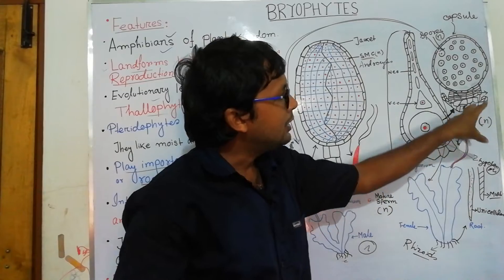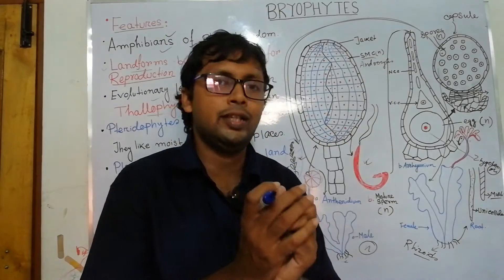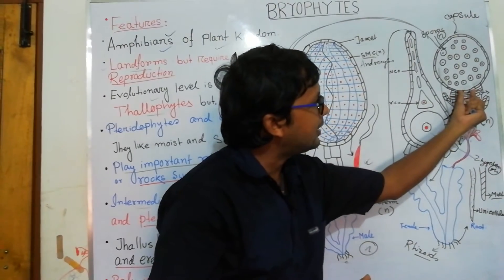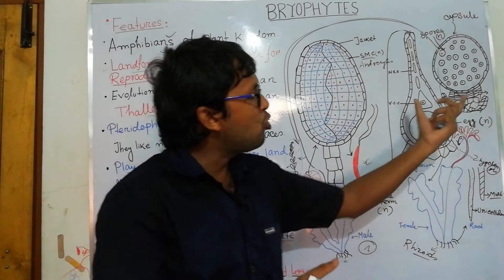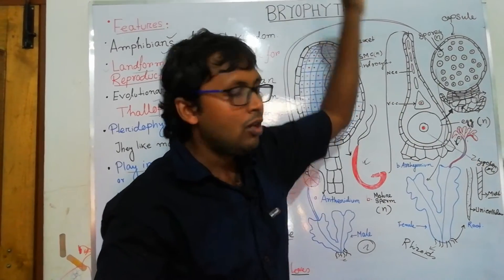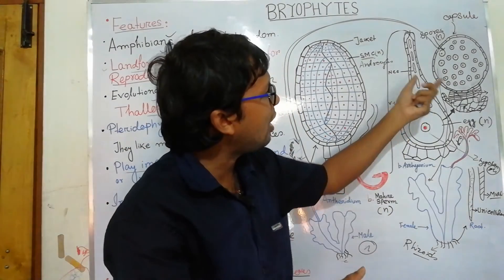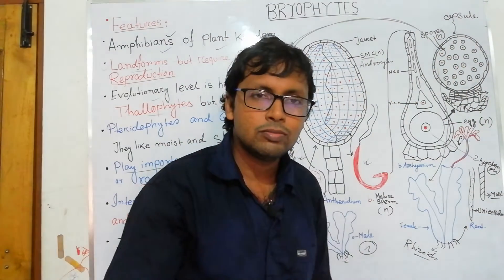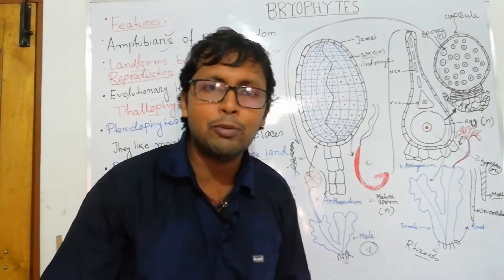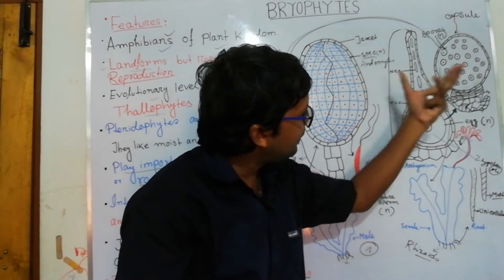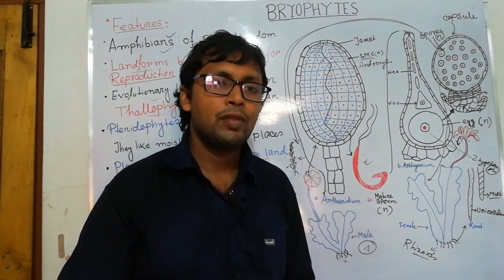The sporogonium consists of a foot, seta, and capsule. In liverworts, the foot and seta are not very developed, and the capsule dominates. But in mosses like Sphagnum, the foot is well developed, the seta is long, the capsule is well-structured, and outside the capsule there is a covering called the calyptra. The sporophytic body is dependent on the gametophytic body — mainly the female body — like a parasite, absorbing nutrition from it.